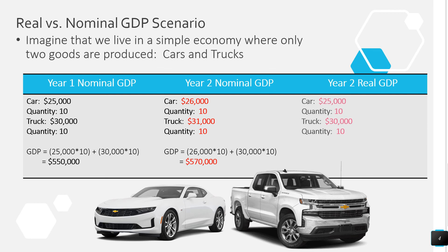So how can we get the real GDP for year two? What we'd want to do is calculate year two's GDP using the prices from our base year. In this case, our base year is year one — that's the year we start counting from, and we use those prices to see what level of production we're at. So going back to year one prices, a car is $25,000 and a truck is $30,000, times the quantity from year two which was 10. That gives us $550,000 — the same as year one. That tells us there's been no increase in production, meaning the economy has not grown at all. Using real GDP, we correctly see no growth, whereas nominal GDP would have misled us.